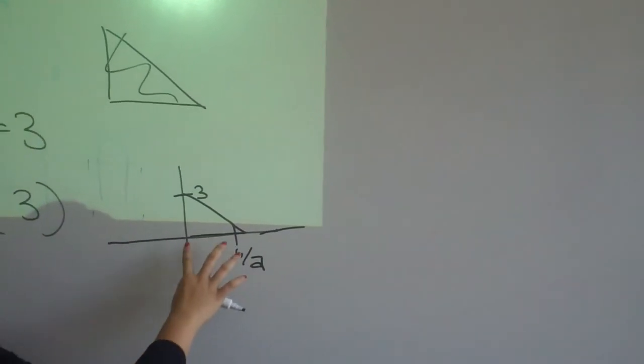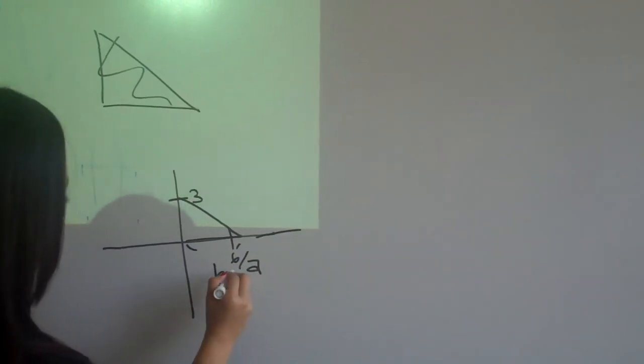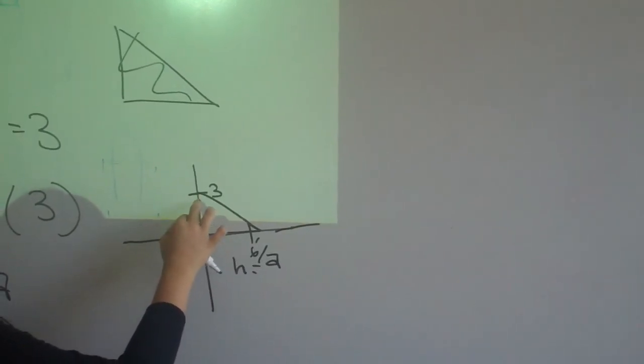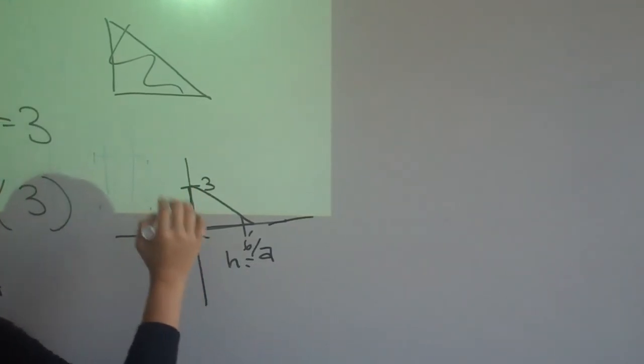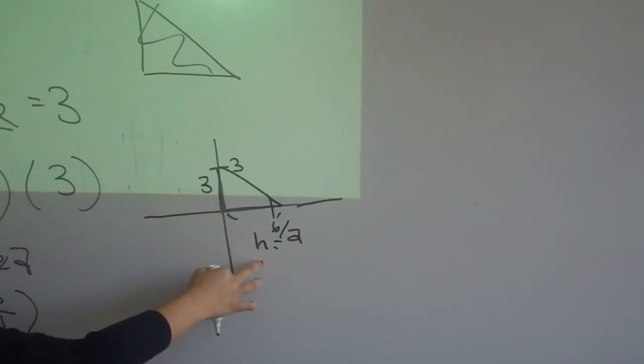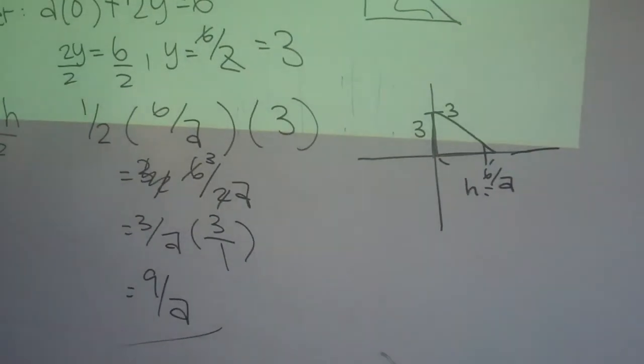And so, this here is the h, and this will be 6 over a, and this here, this will be 6 over a. The opposite side will be 3. So, just take this and divide by 2. You get like this. Great.